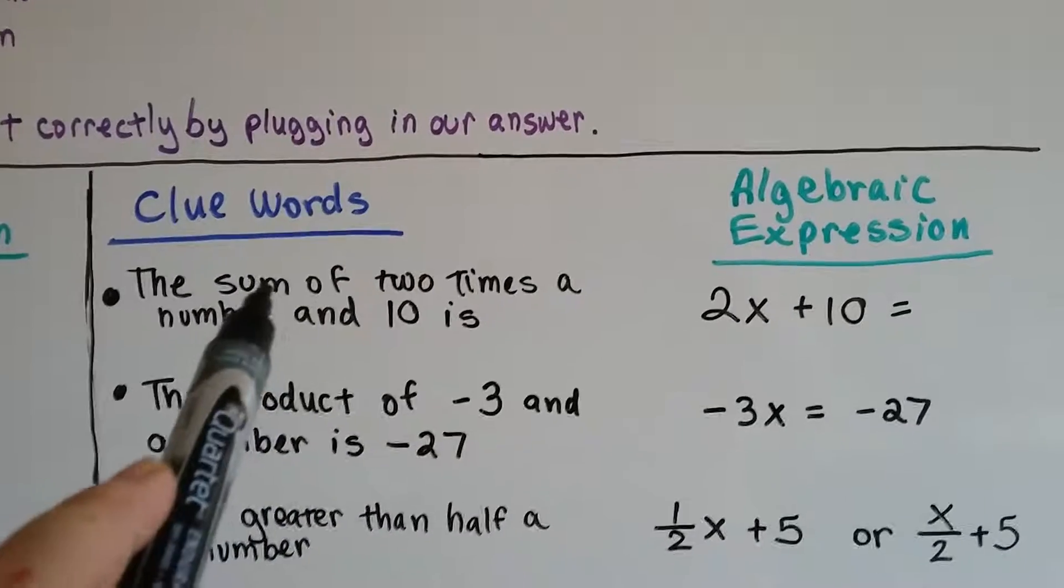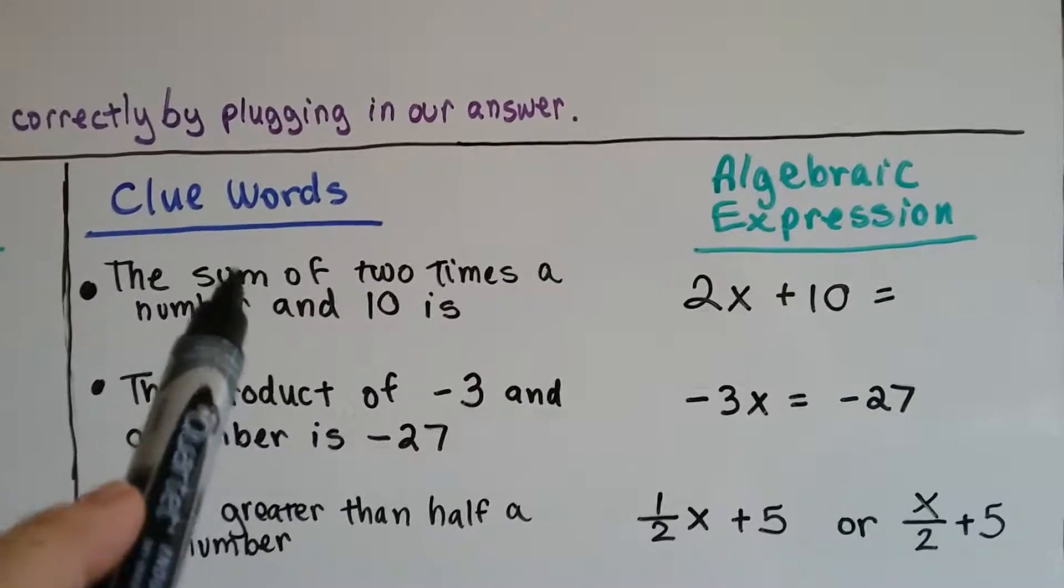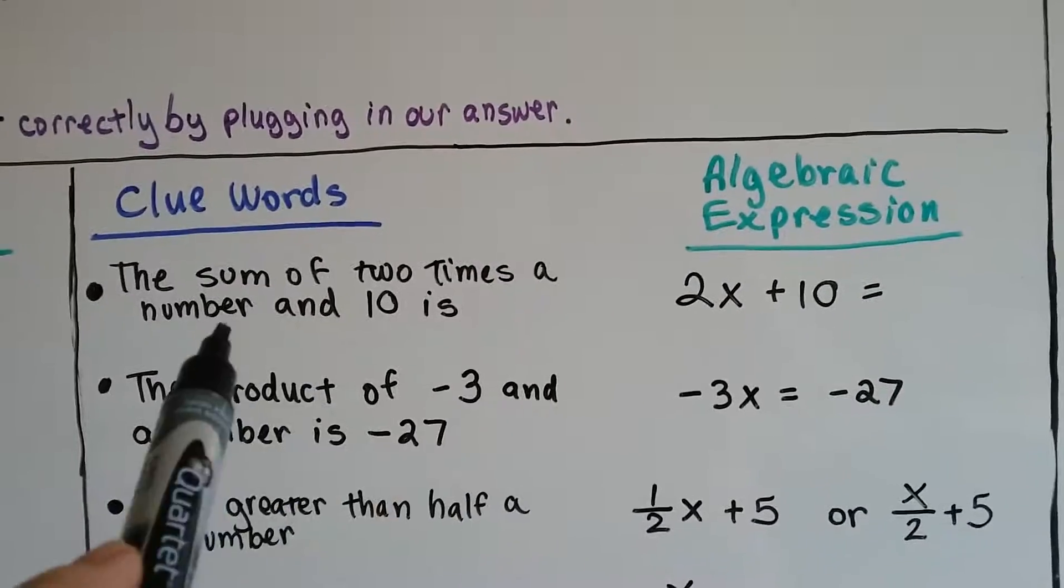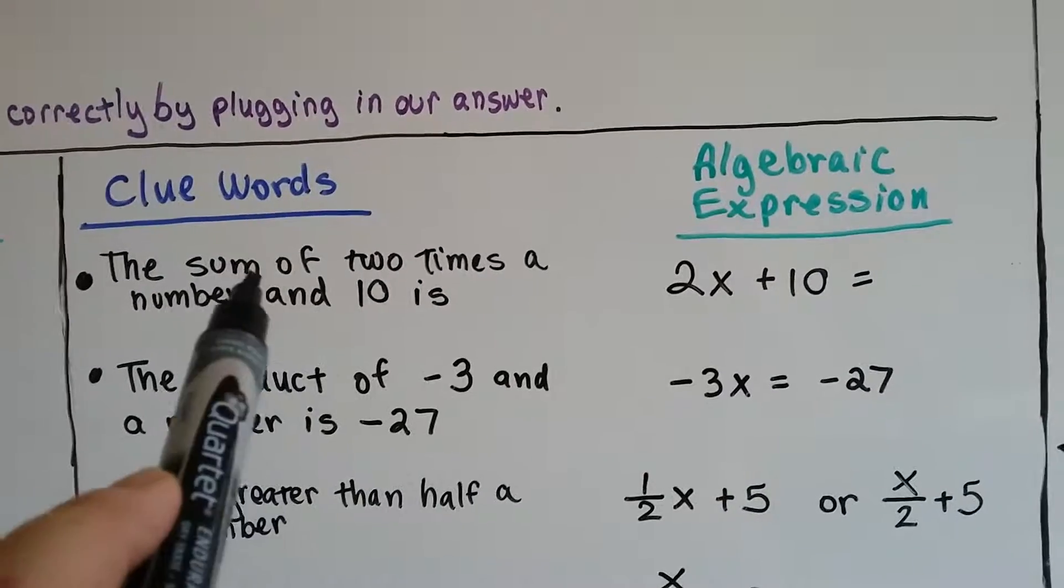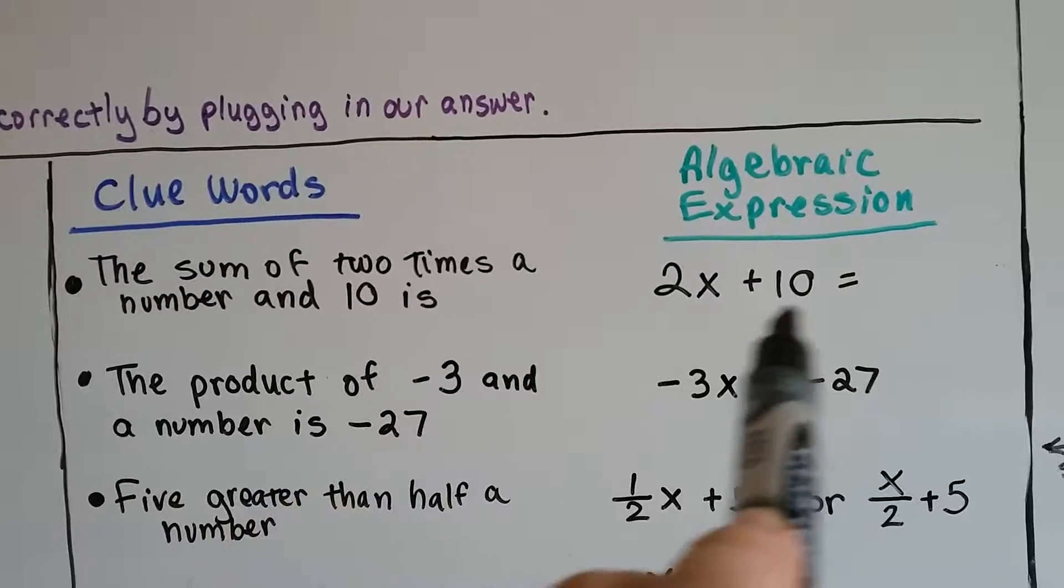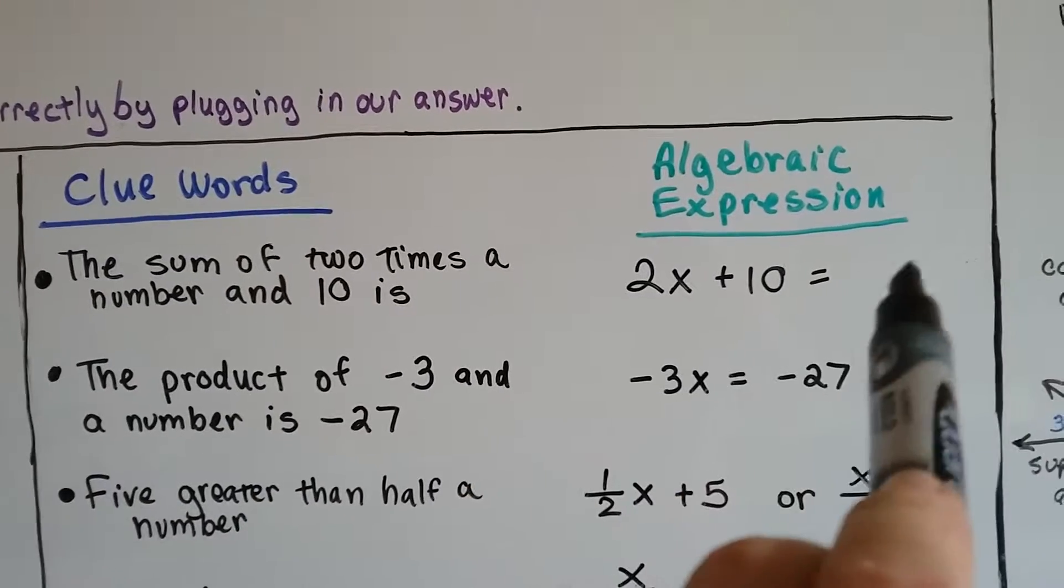If it says the sum of 2 times a number and 10, then we know that we're adding. We've got 2 times a number, so we've got 2x, 2 times some variable, plus 10. That would make our sum.